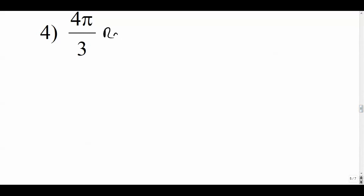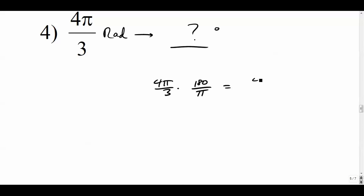Example four: converting 4pi/3 radians to degrees. Multiply by 180 over pi — the pi's cancel. We get 4 times 180 over 3. Since 3 goes into 180 sixty times, this is 4 times 60, which equals 240 degrees.